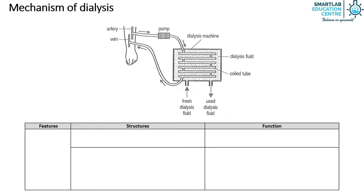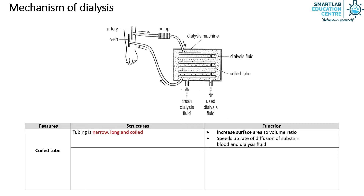Firstly, the dialysis machine consists of a coiled tube. This tubing is narrow, long and coiled. This increases the surface area to volume ratio, speeding up the rate of diffusion of substances between the blood and dialysis fluid.